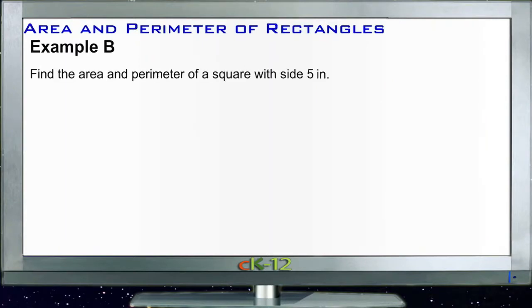Example B says find the area and perimeter of a square that has sides that are 5 inches. Well, if we have a square, I'll sketch one in here real quick. If we have a square, it's just like a rectangle. In fact, a square is a type of rectangle. But the difference is that all 4 sides are the same.